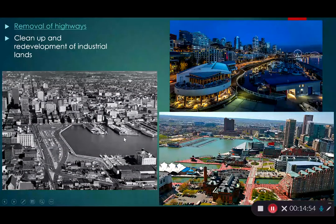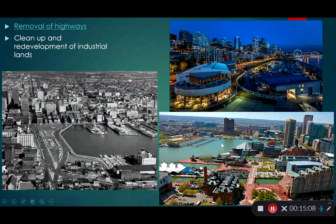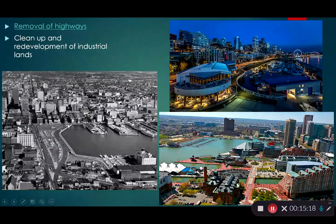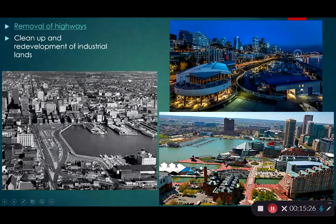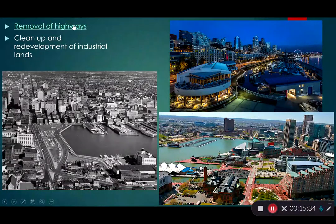Cities are taking down old factories and removing highways that blocked waterfront access. Baltimore's Inner Harbor, for example, has been transformed from a run-down industrial area into a vibrant destination with an aquarium, museum, shopping, and residential development. A highway that once separated downtown from the waterfront has been removed, making it a major city amenity.